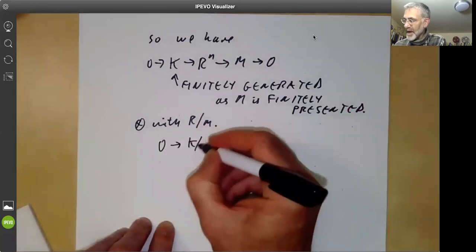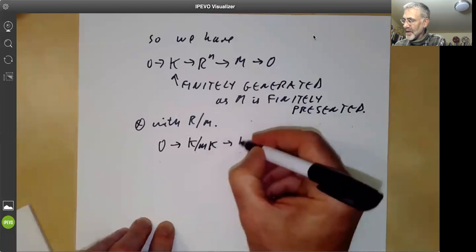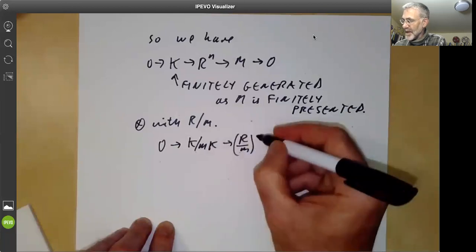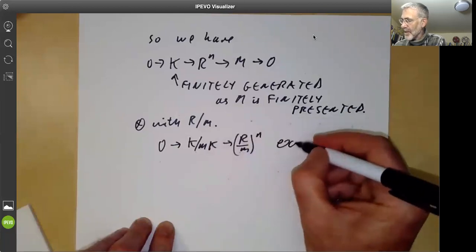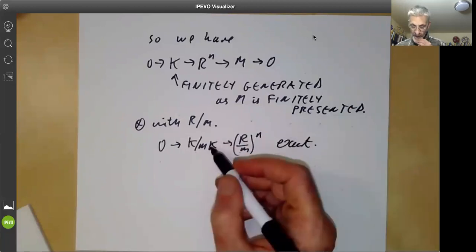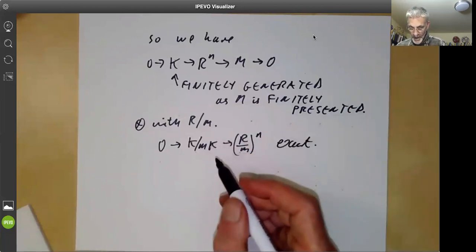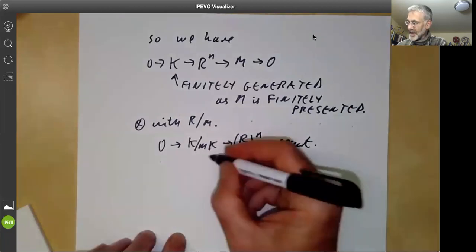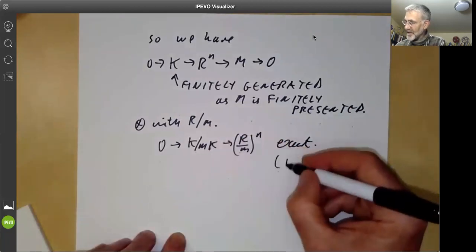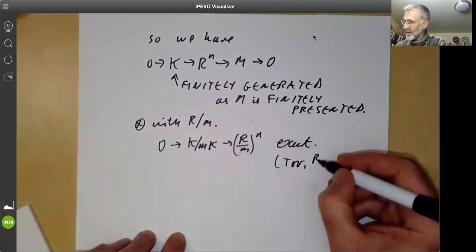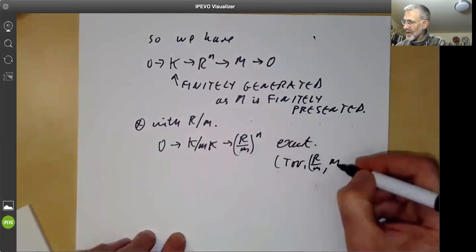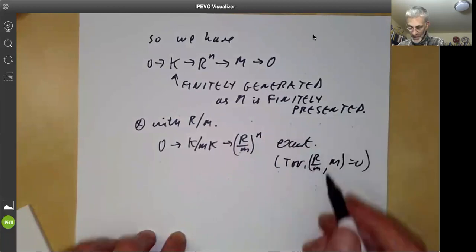0 goes to K over MK goes to R over M tensor R to the N is exact, because of this condition TOR 1 R over M is equal to zero. That's where we use the condition.